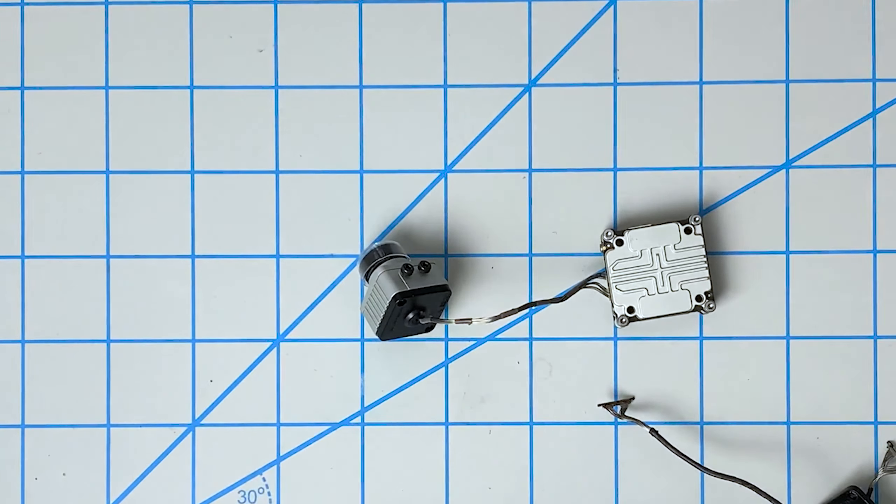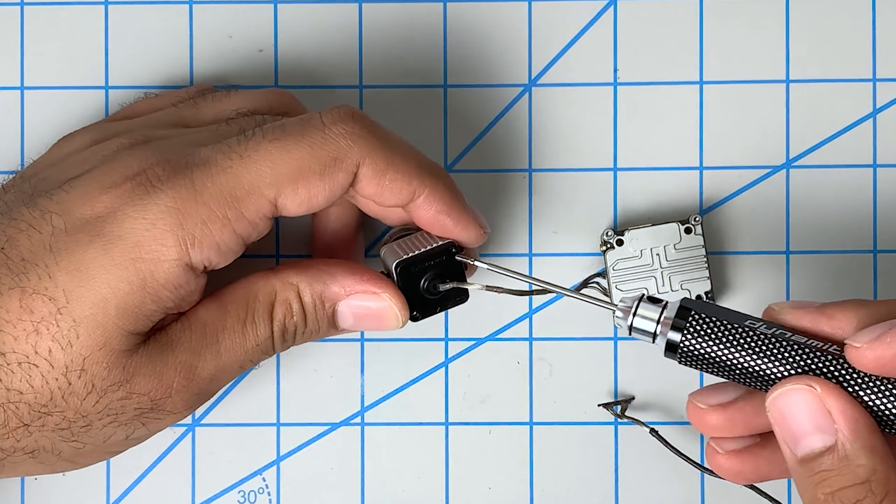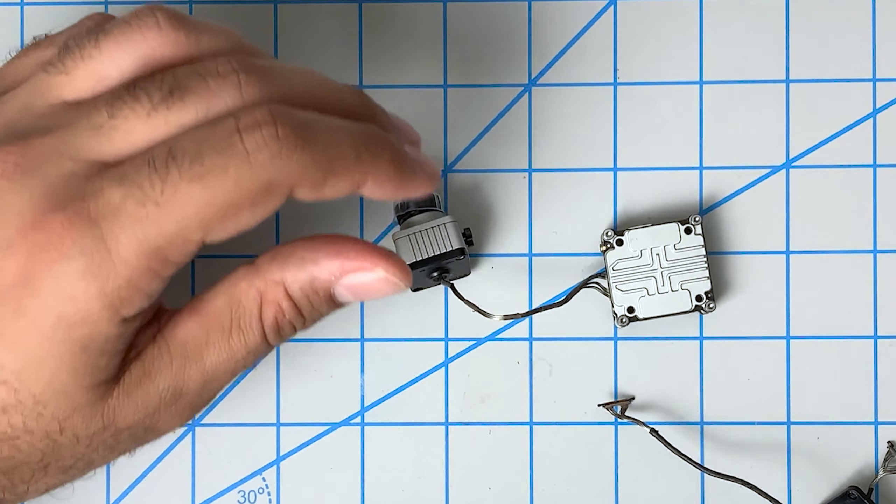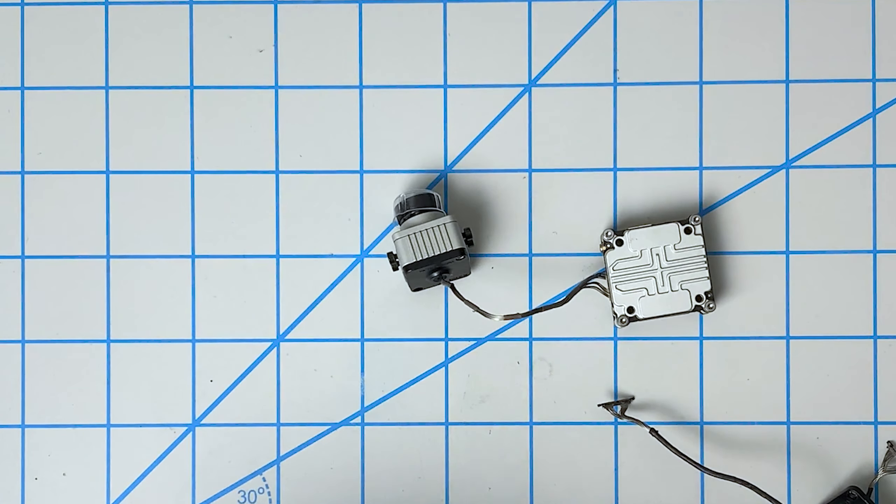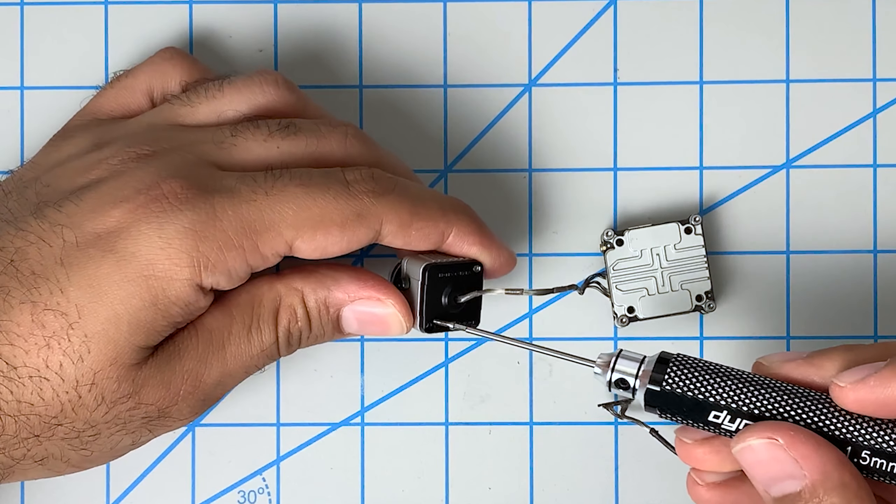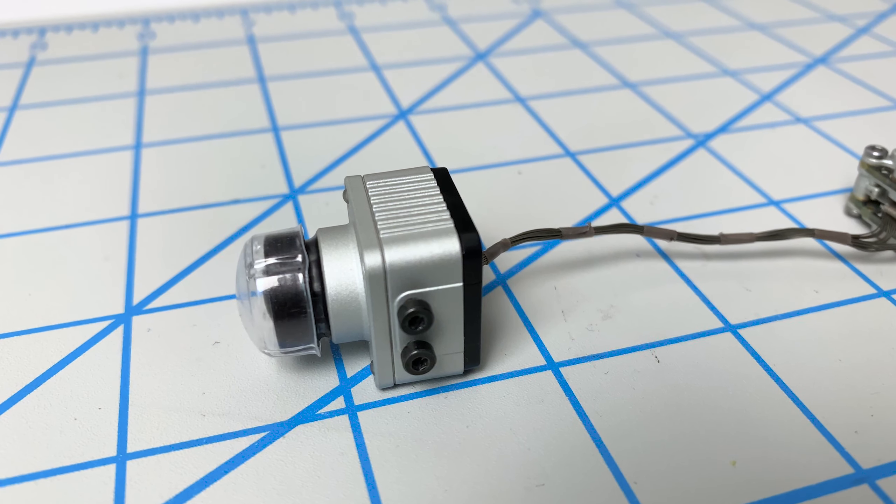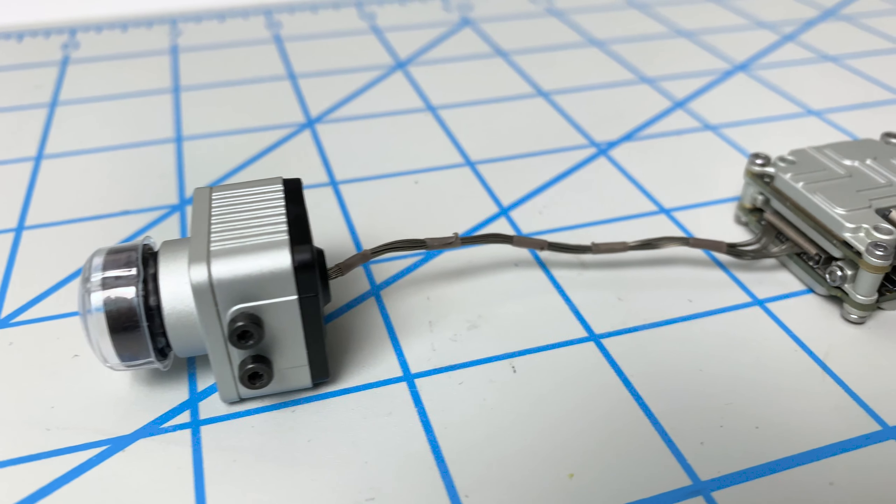Now we can reinstall the screws. And again, a little tiny bit of Loctite, because they do go into metal. And your quad does vibrate quite a bit. So you want to make sure that these do not work themselves out. And there you have it. Your Caddx Vista now has a shorter cable.